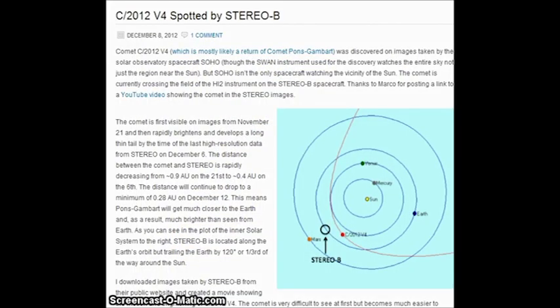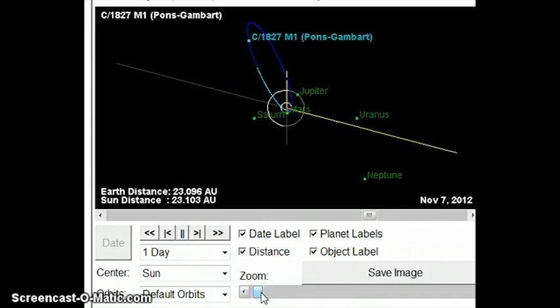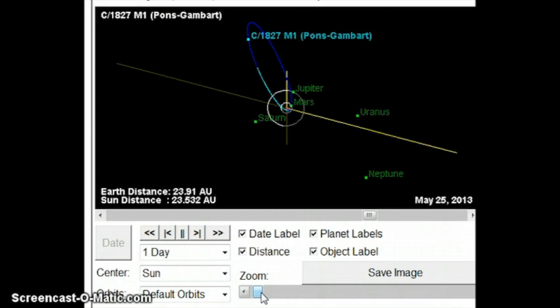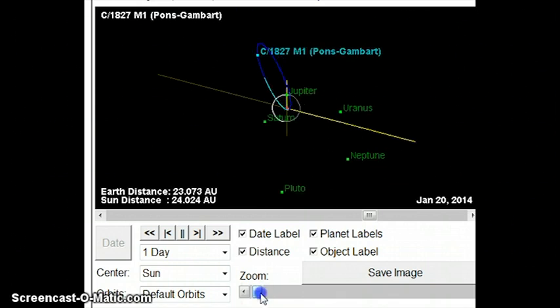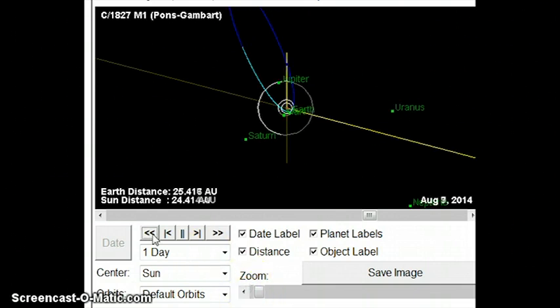All right, this gentleman says that it's either C-2012V4 or Comet Pons-Gambart. As we see here, we're looking at the Pons-Gambart by NASA JPL's orbit data. It's way out there. Pons-Gambart is in BFE. It's nowhere near where we're supposed to be. No way it could be this comet. I mean, if it's this comet, somehow this comet has picked up in speed by like 10 times, 20 times, 100 times. Who knows? You definitely know it's not Pons-Gambart. Excellent.